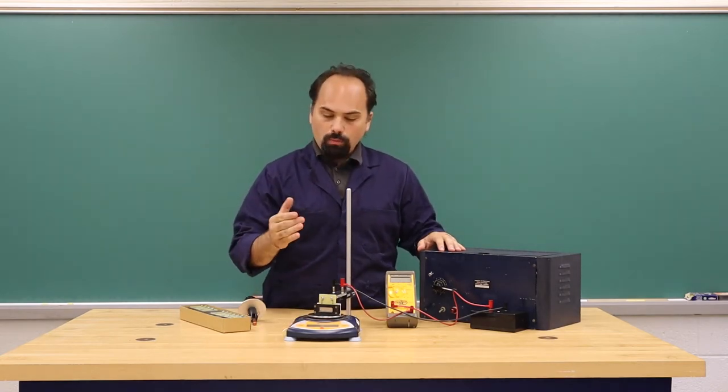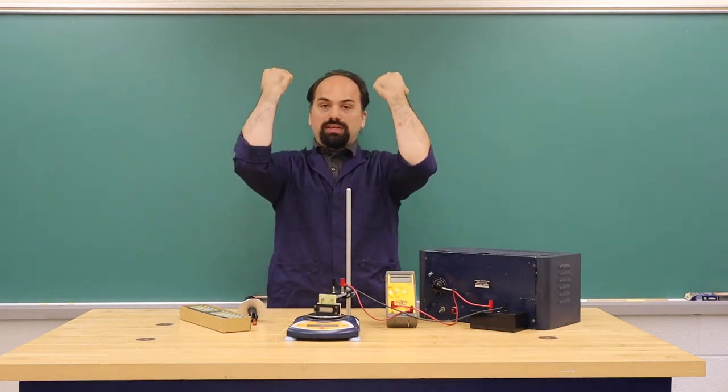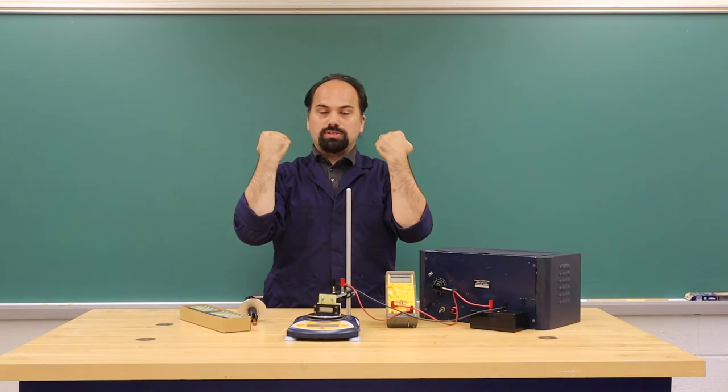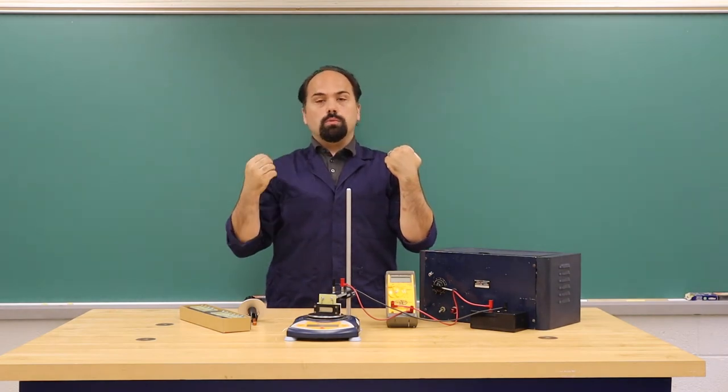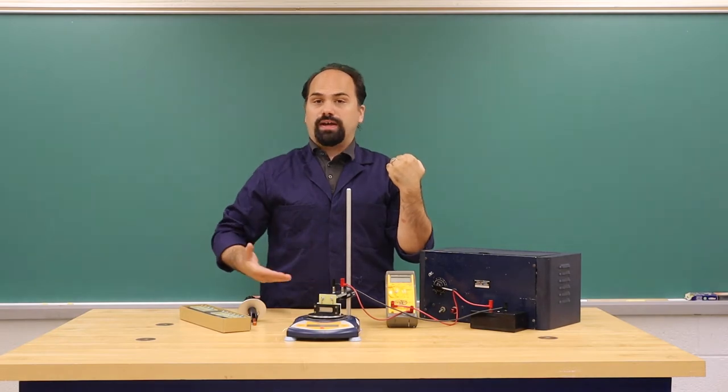You can think of it almost like the magnet is doing a chin-up on the wire. It's pulling down on the wire, which is lifting itself up, which makes the scale that it's sitting on read a lower effective mass.